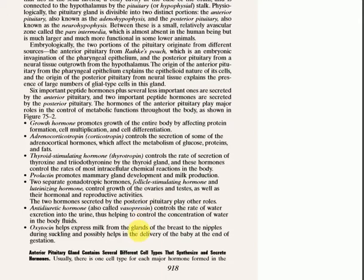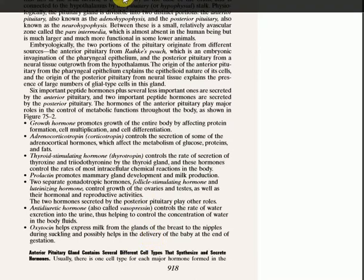The two hormones that belong to the posterior pituitary are antidiuretic hormone and oxytocin. Another name for the antidiuretic hormone is vasopressin. It controls the rate of water excretion into the urine, thus helping to control the concentration of water in the body fluid. This hormone is especially important during conditions of water scarcity or dehydration. Oxytocin helps to express or eject milk from the mammary gland, and it possibly helps in the delivery of the baby at the end of gestation.